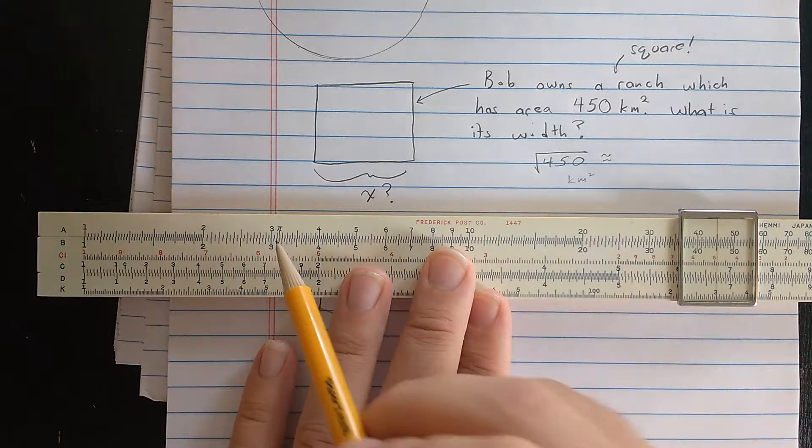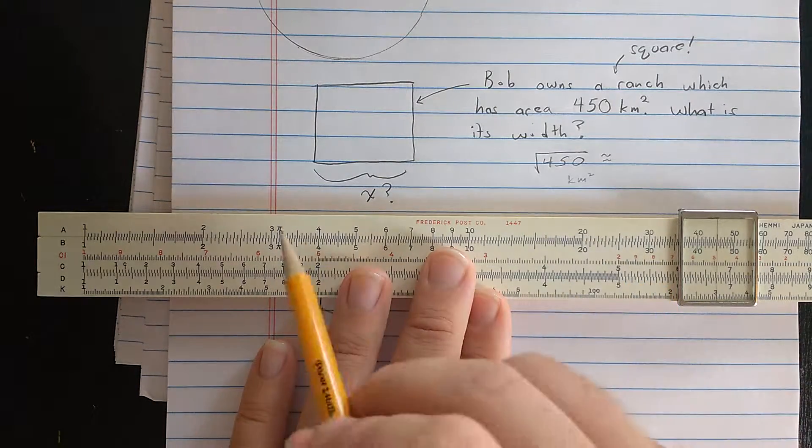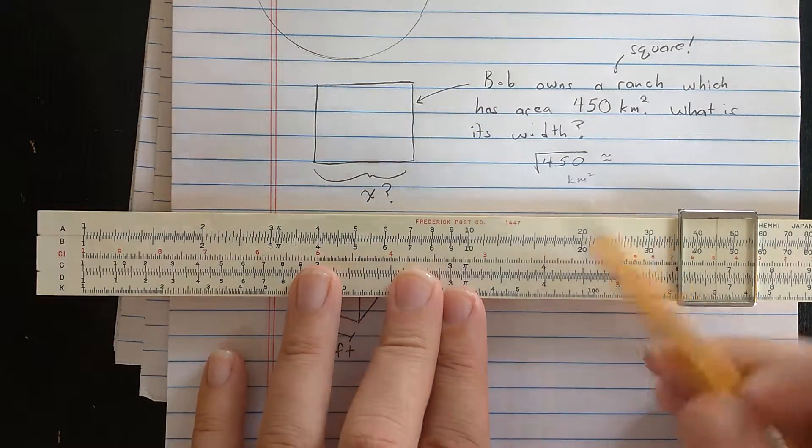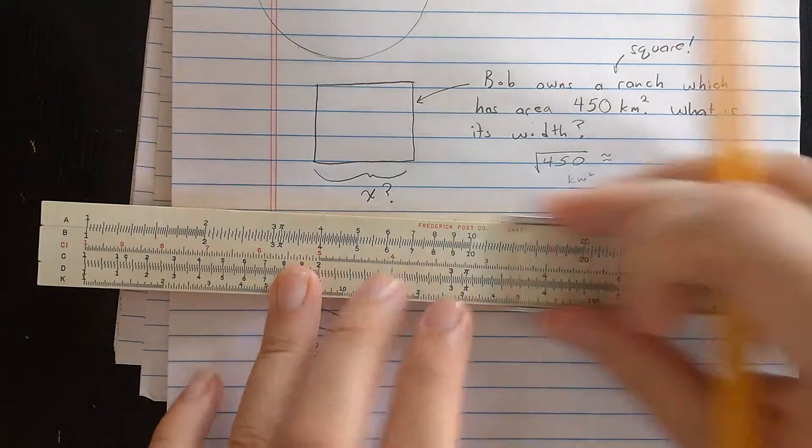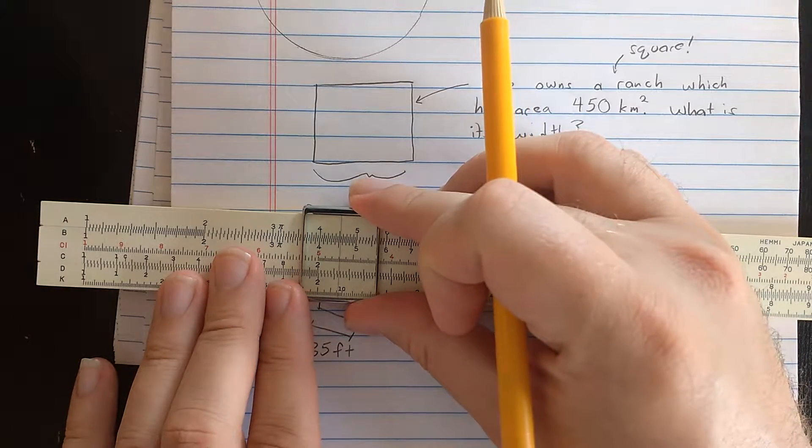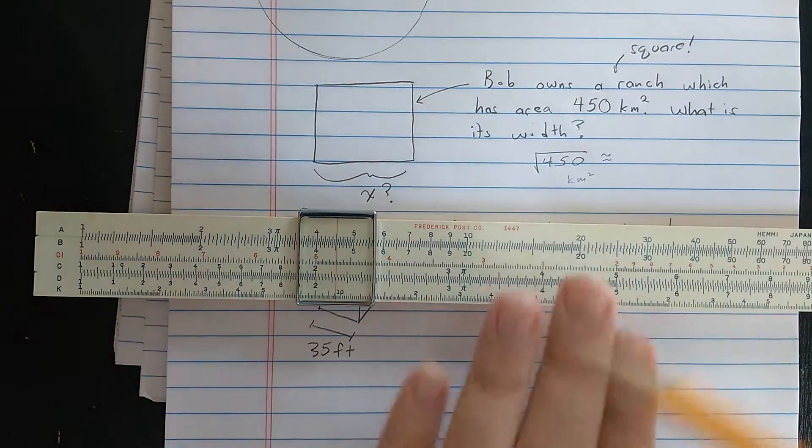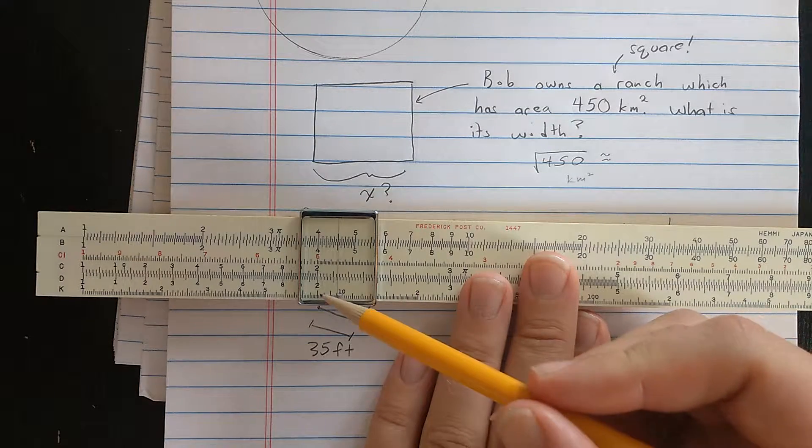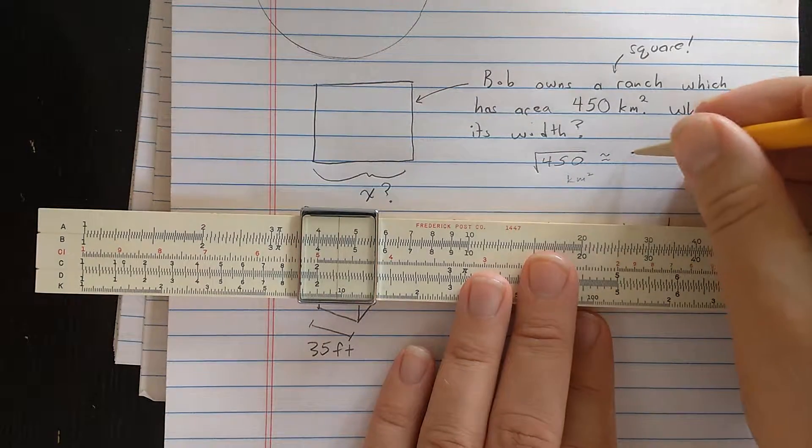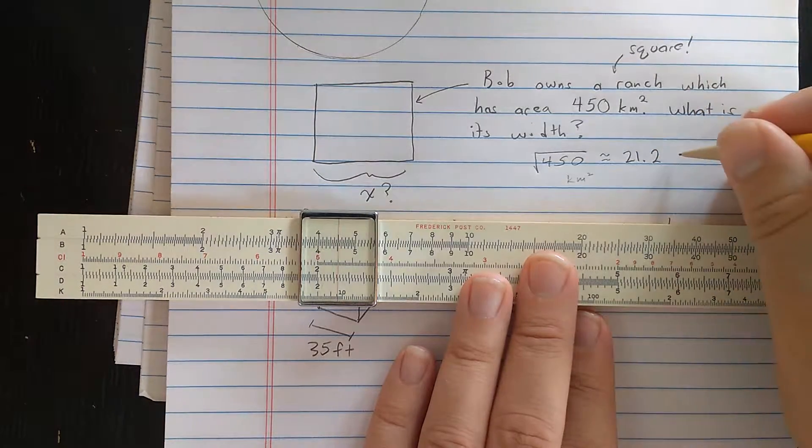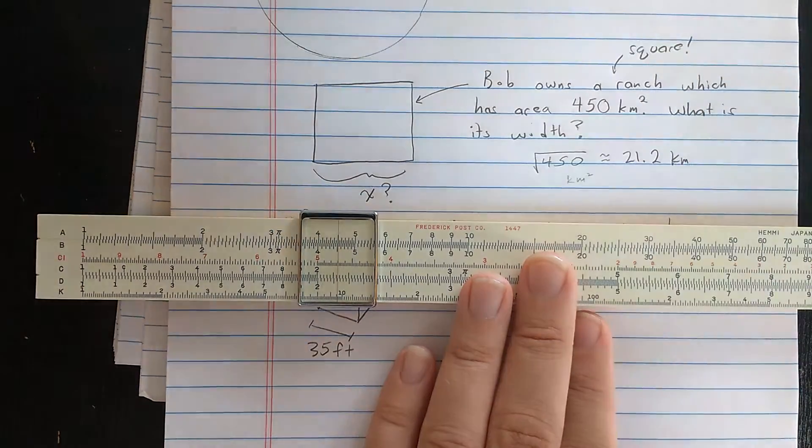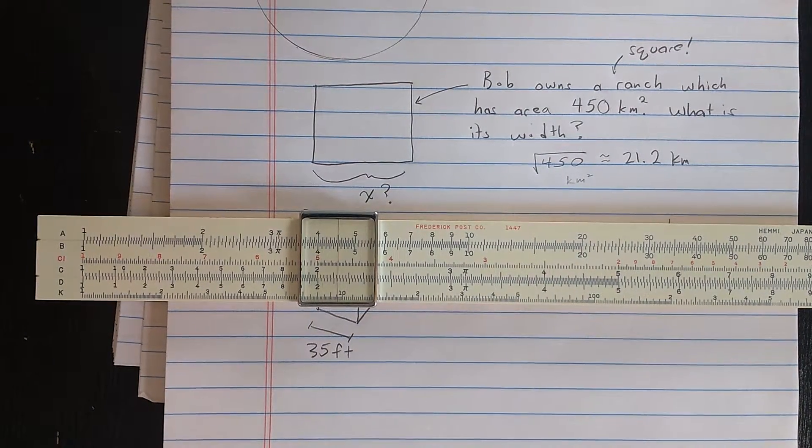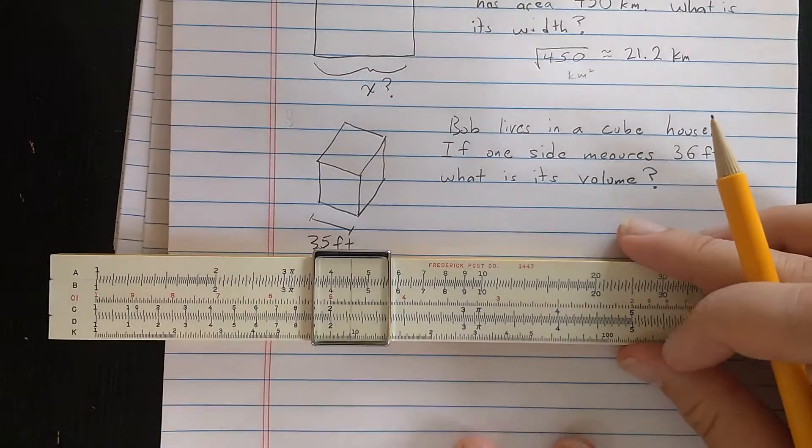So one digit, two digits, three digits, four digits, five digits, six digits, and so on. So I have three digits. So one, two, three. So I should be using this side. And then finding the square root here down on the D scale, I read about 21.2 kilometers. And if you imagine I square 20, that's about 400. Sounds right. It's always good to do a sanity check.